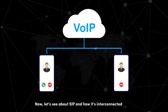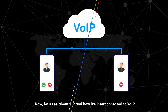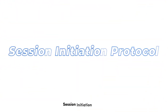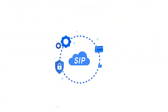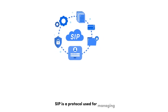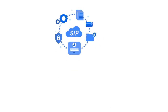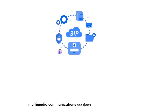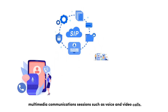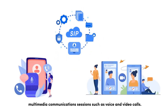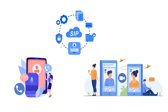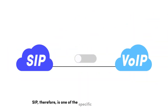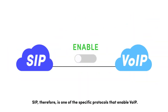Now let's see about SIP and how it's interconnected to VoIP. SIP — Session Initiation Protocol — is a protocol used for managing multimedia communication sessions such as voice and video calls. SIP, therefore, is one of the specific protocols that enable VoIP.